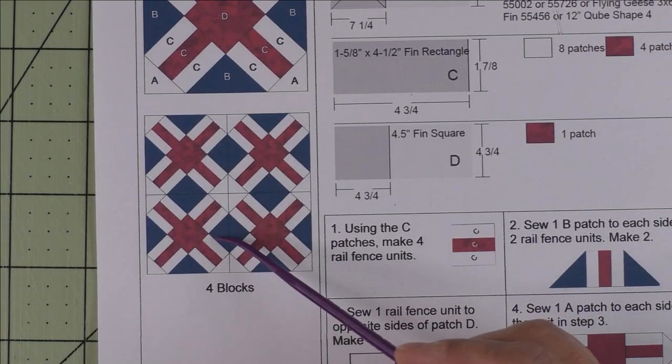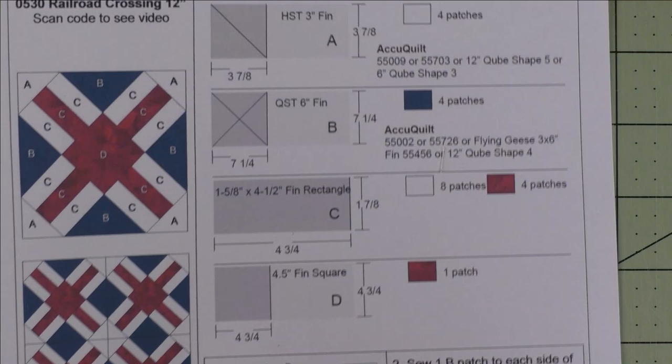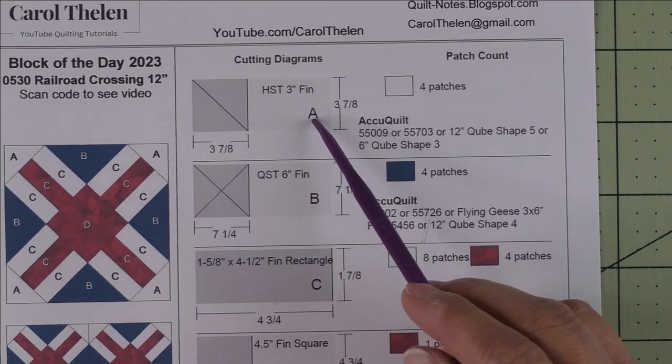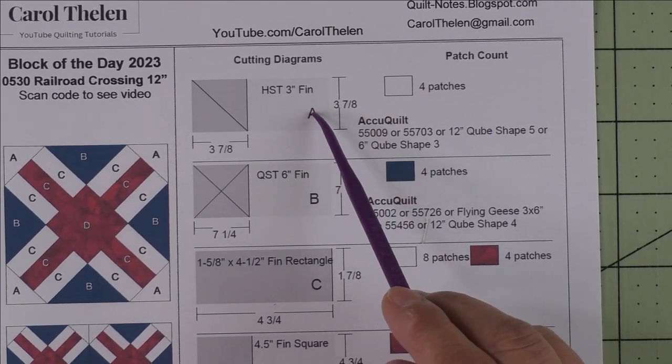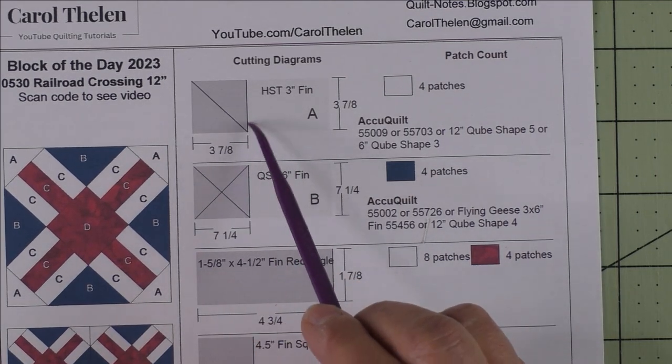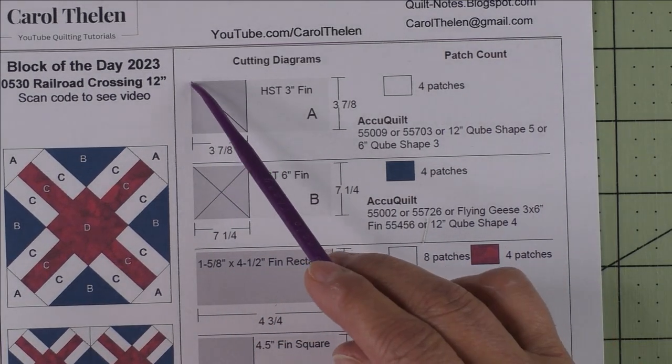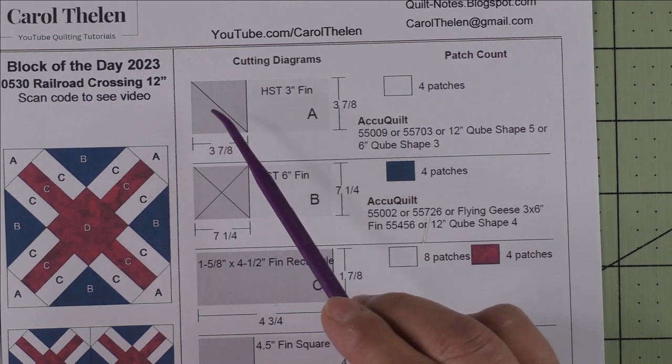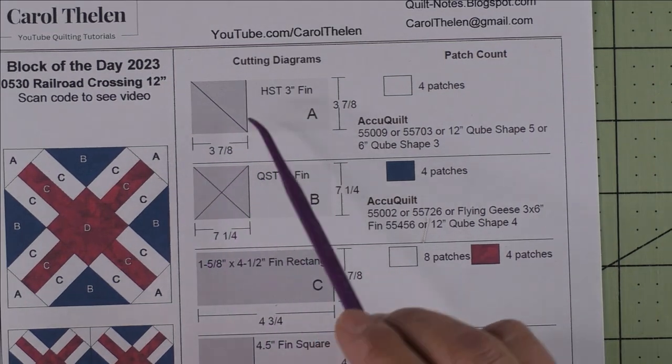Patch A is a three inch finished half square triangle. We'll cut squares that are three and seven-eighths inches and cut them in half diagonally once for two patches. These patches are here in the four corners of the block.